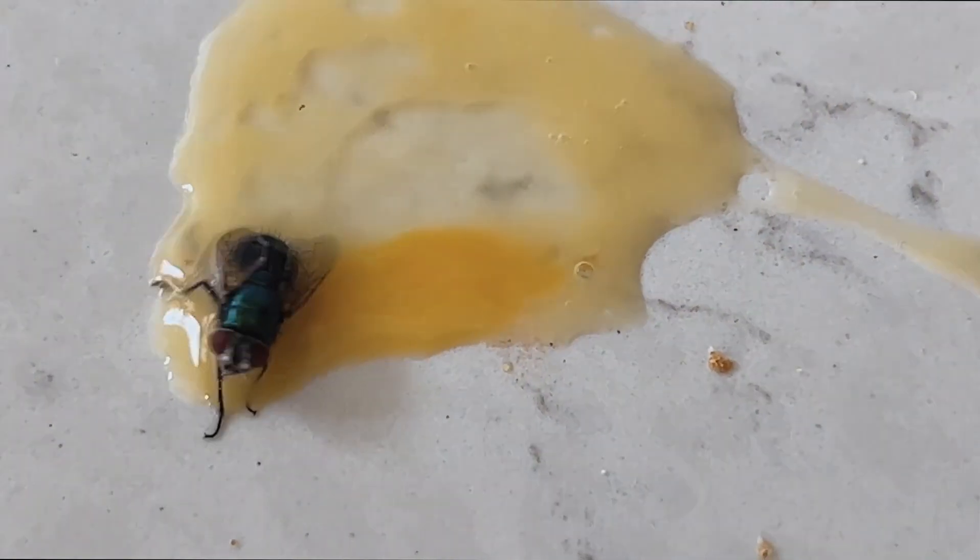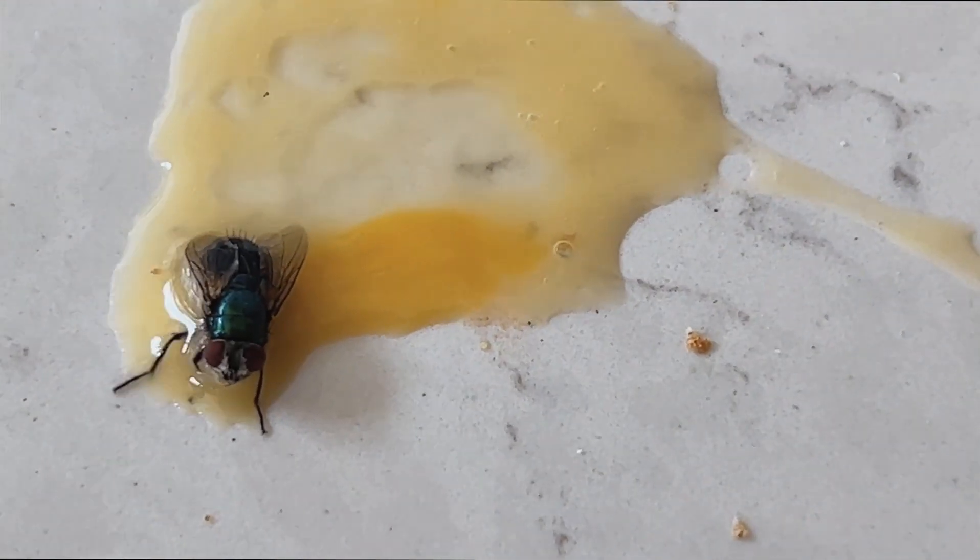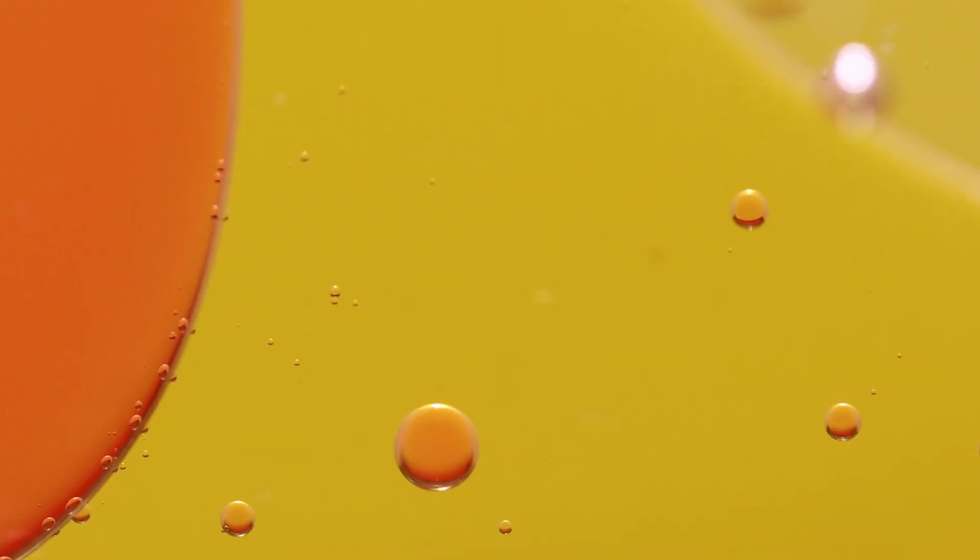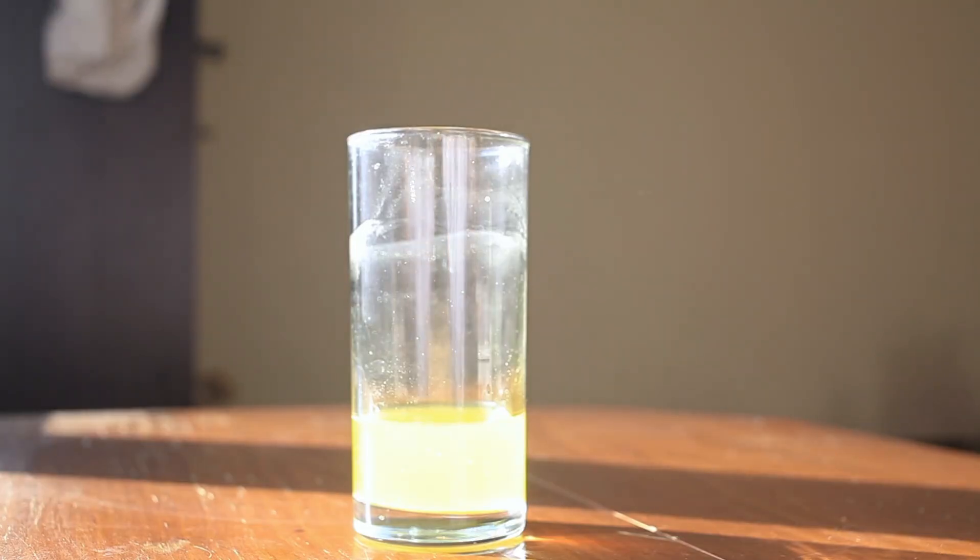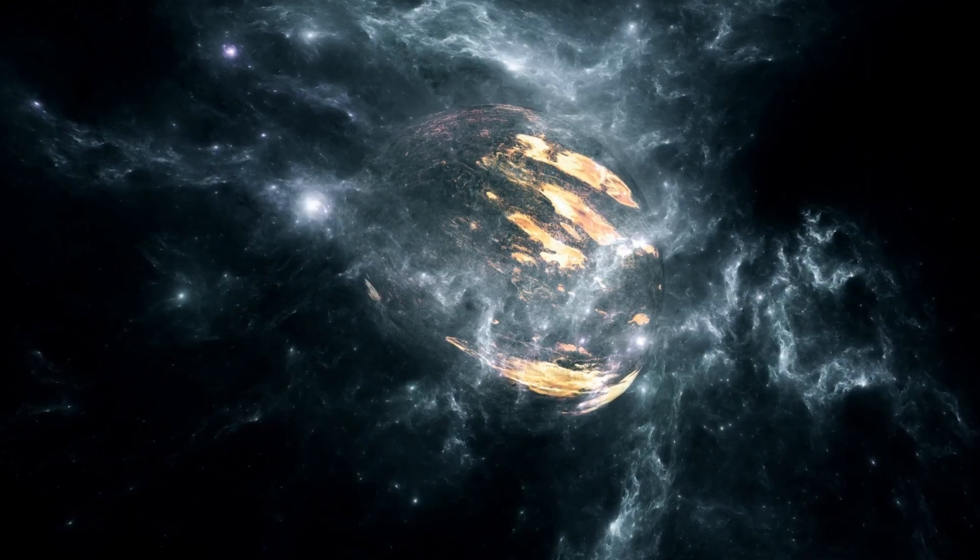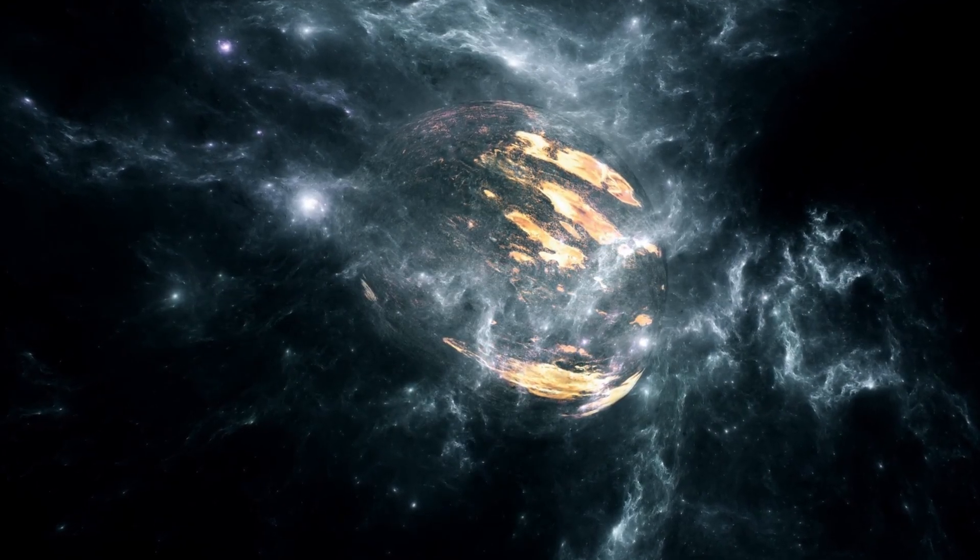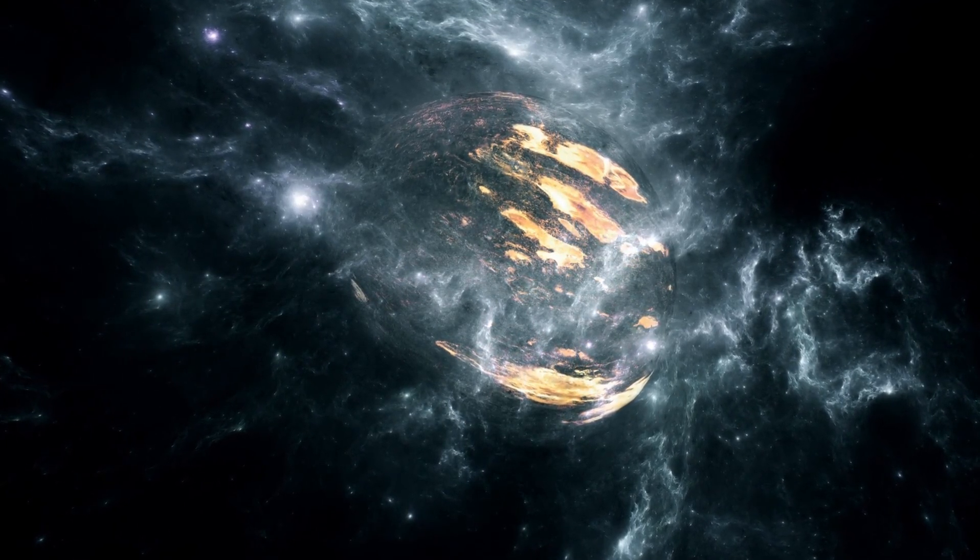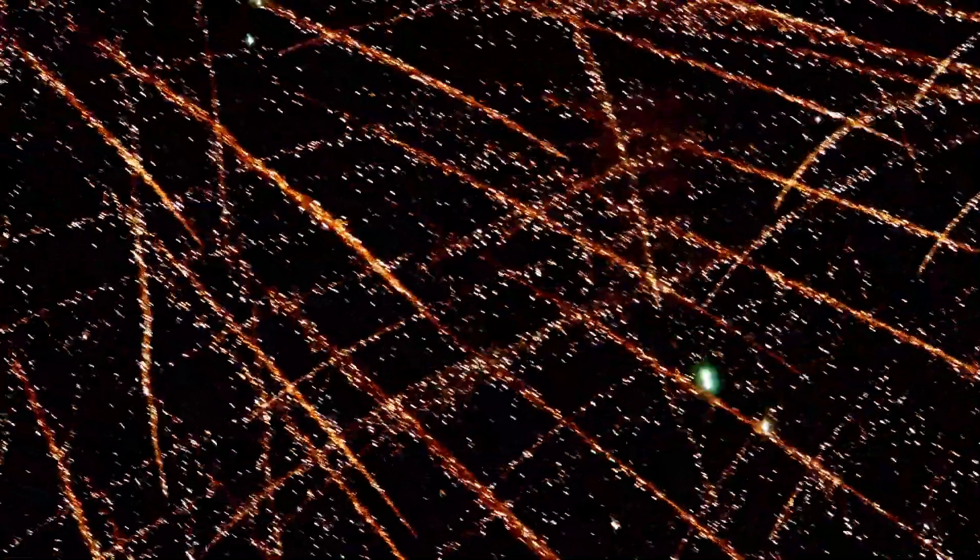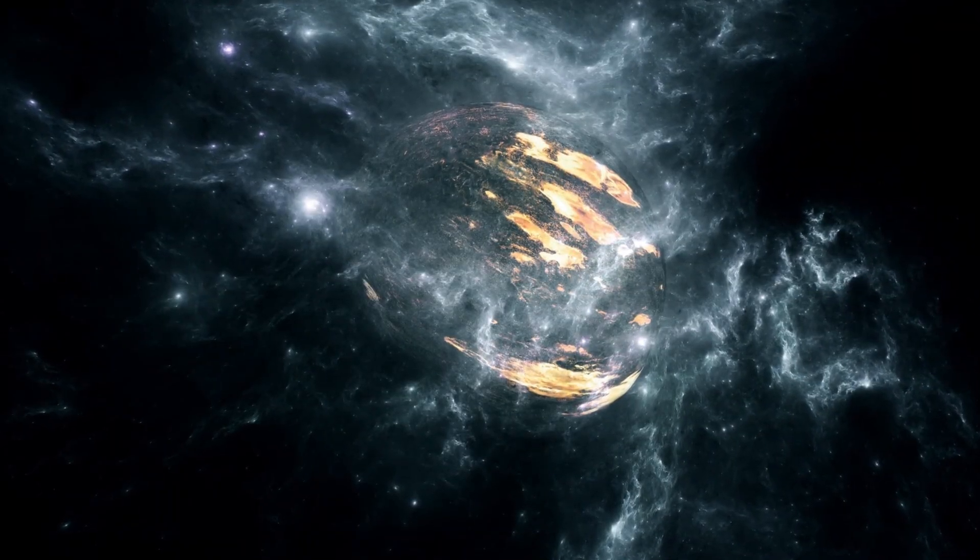The scale of this mass ejection and the subsequent dimming sparked discussions among astronomers about whether this event could be a precursor to a supernova explosion. The proximity of Betelgeuse, about 725 light-years from Earth, adds to the intrigue, as any such explosion would be visible from Earth and provide a rare opportunity to observe a supernova up close. Yet, the question remains: what does this dimming event portend for Betelgeuse's future?